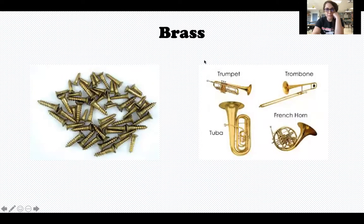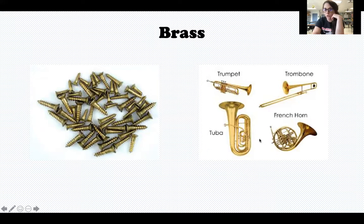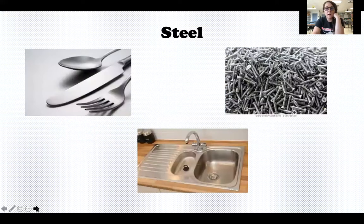This is brass. Brass kind of looks like gold, but it's not the same — it's much, much less expensive than gold. A lot of screws are made out of brass, and a lot of instruments. These instruments are called brass instruments because they are made out of brass: trumpet, trombone, tuba, French horn, and some others as well.